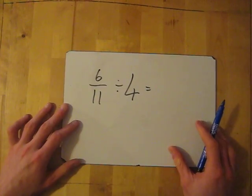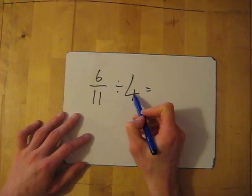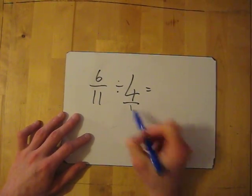Let's try another one. 6 11ths divided by 4. So first thing, change the whole number into a fraction. So it's 4 over 1.